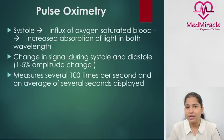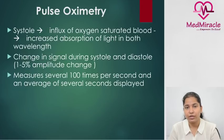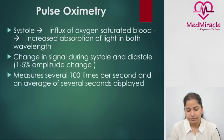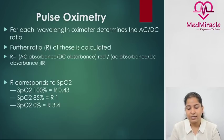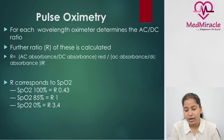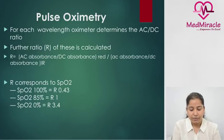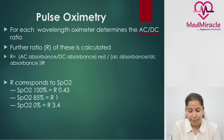The oximeter measures around 100 times per second and an average over several seconds is displayed on the monitor — which is why the SpO2 probe takes some time to display a value when first applied. For each wavelength, the oximeter determines the AC and DC ratio: AC is pulsatile blood flow and DC is non-pulsatile blood flow. When SpO2 is 100%, the ratio of infrared to red is 0.43, and when it is 85%, the ratio is 1.